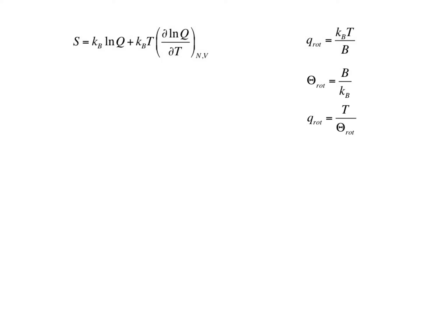Taking the natural log of the partition function, we find that the natural log of Q rotation is the natural log of T minus the natural log of the rotational temperature, which is characteristic for each molecule. And so the derivative of the natural log of the rotational partition function with respect to temperature at constant N and V is simply equal to 1 over the temperature.